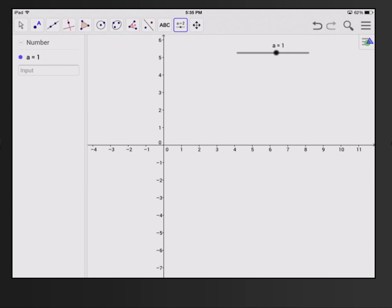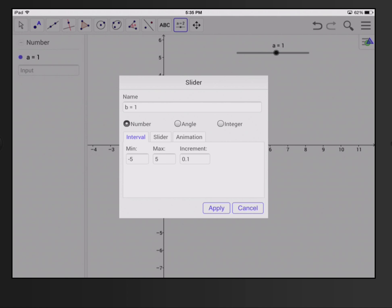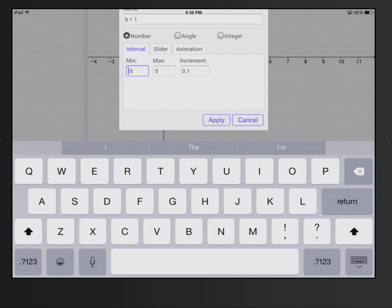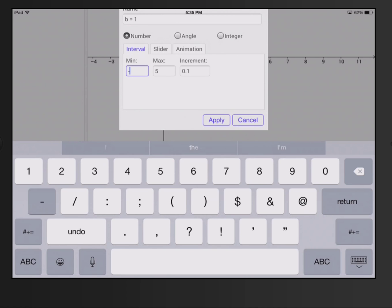And the second slider, I'm still on sliders, so this is slider B, and again I'm going to go from negative 10 to 10, leaving the increment 0.1.